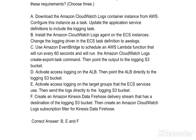Option E: Activate access logging on the target groups that the ECS services use, then send the logs directly to the logging S3 bucket. Option F: Create an Amazon Kinesis Data Firehose delivery stream with the destination of the logging S3 bucket, then create an Amazon CloudWatch Logs subscription filter for Kinesis Data Firehose. The correct answer is options B, E, and F.